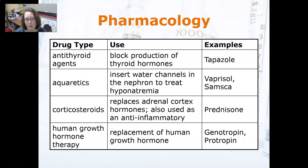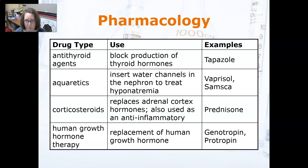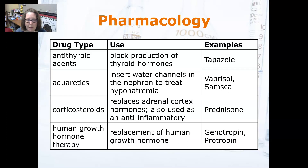An aquauretic is a new type of diuretic — slightly different in that it inserts water channels into the nephron to treat hyponatremia. It allows water to leave if there is an excess amount of water without sodium leaving. Examples include Vaprisol and Samsca.